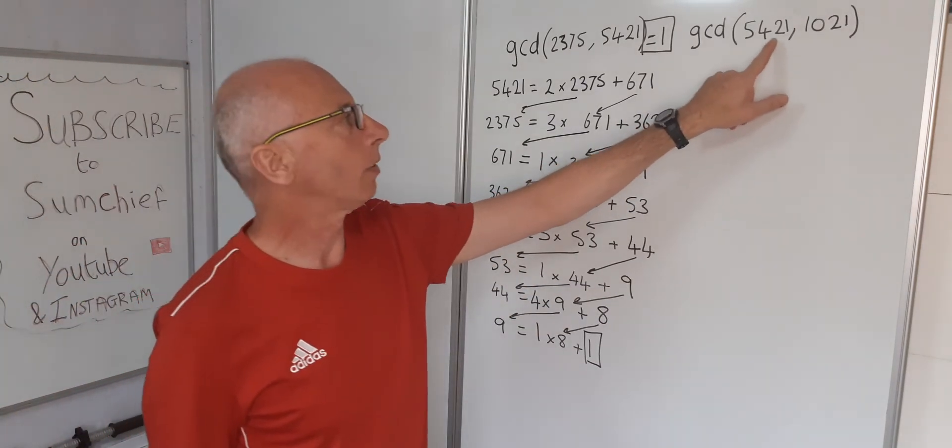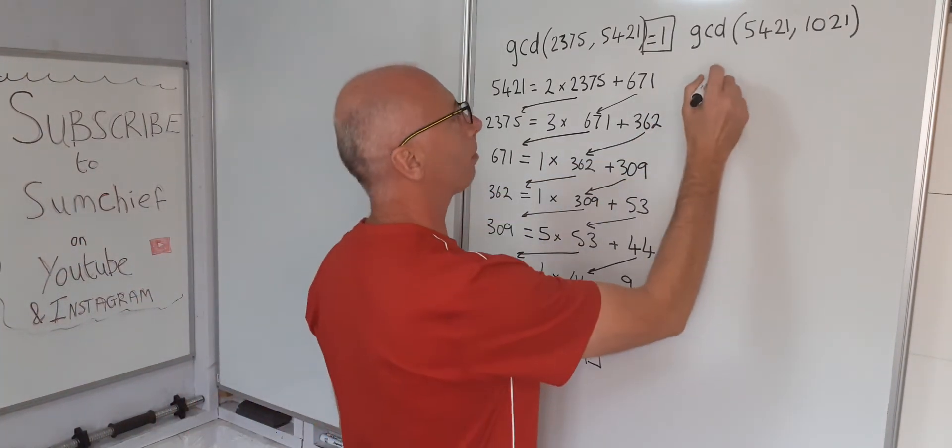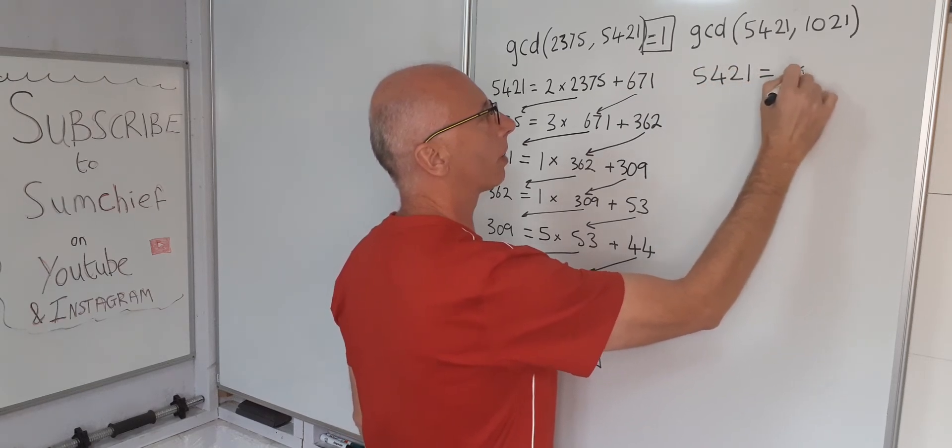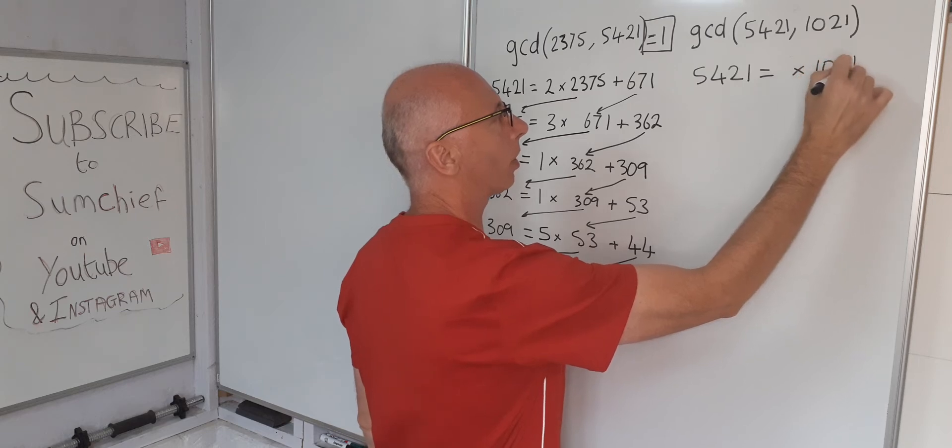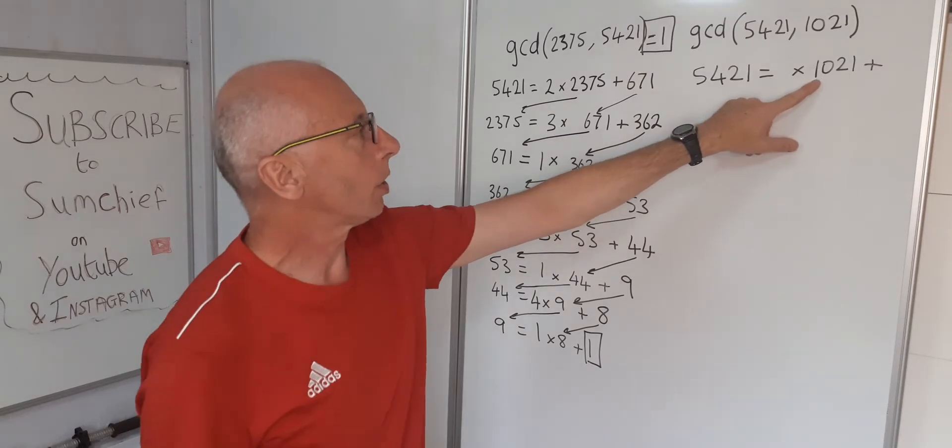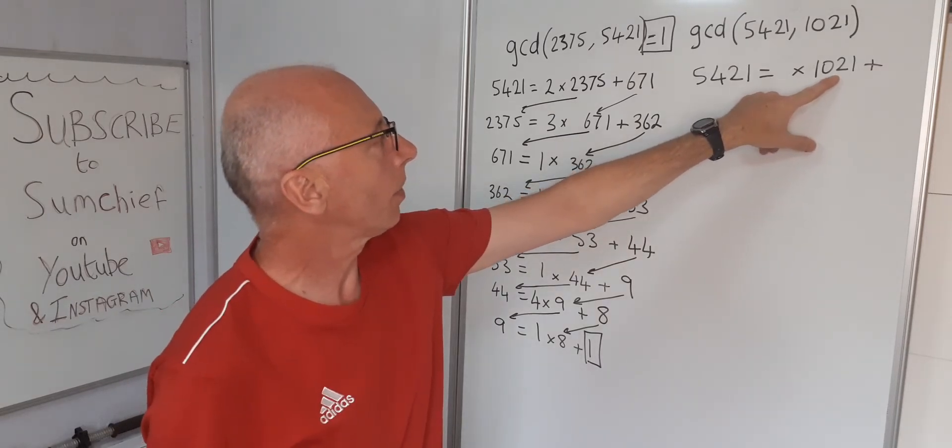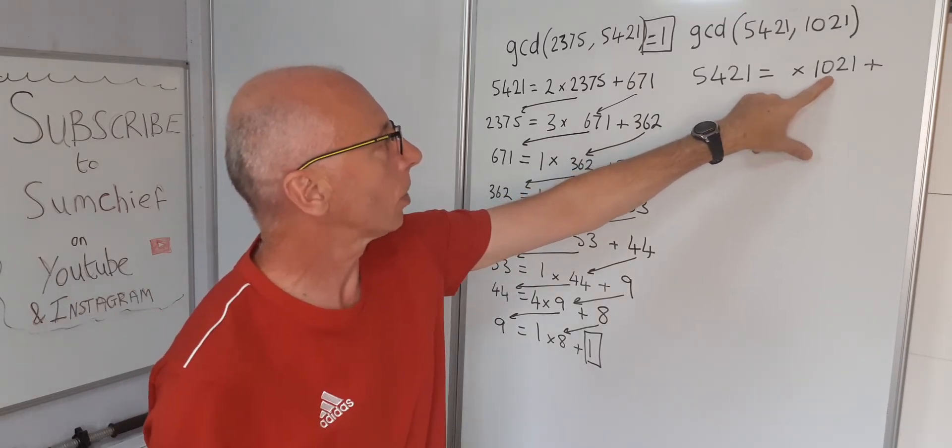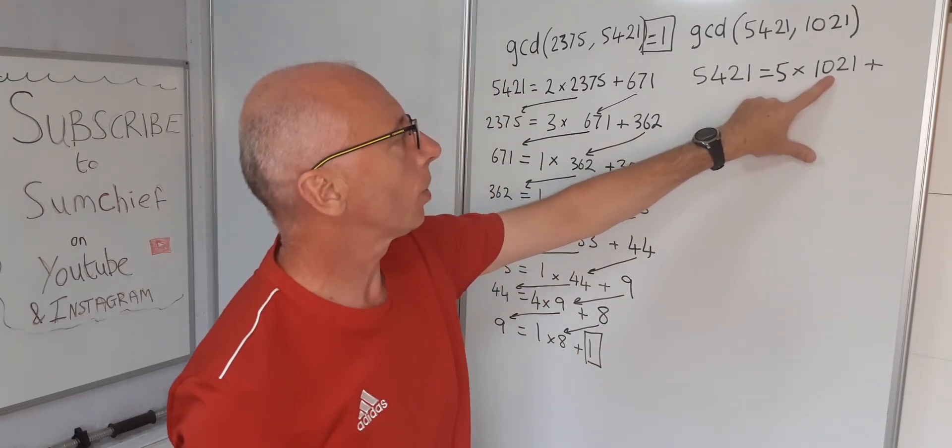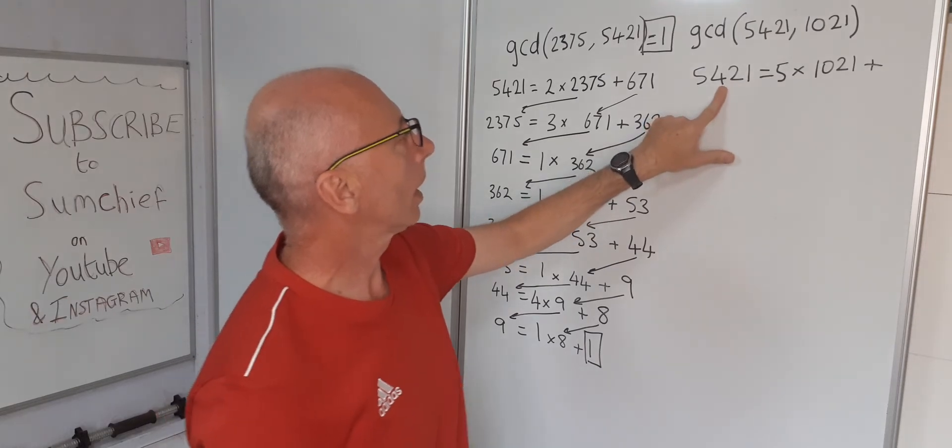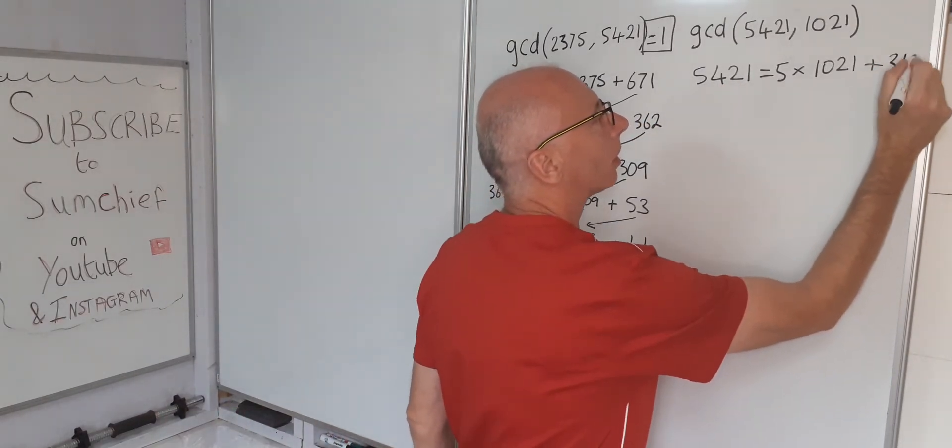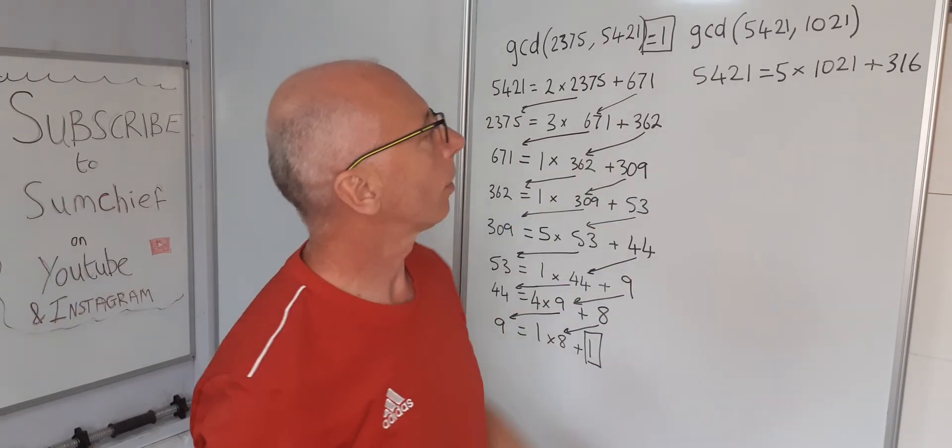Move on to the next one. 5421, this time that's the biggest number, and that equals something times 1021 plus a remainder. 5 times 1021 gives us 5105. So that gives us 316 left over. So this is still correct.